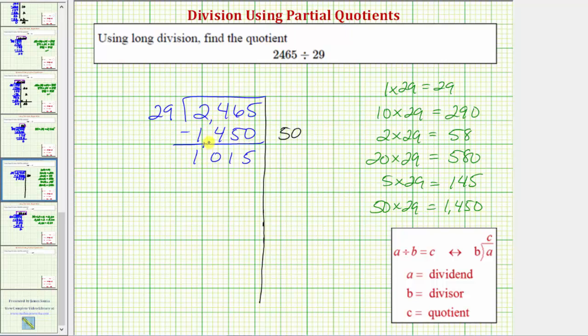But we still have 1,015. And now we repeat the process. We need to determine a certain number of 29s that we know for sure are in 1,015.